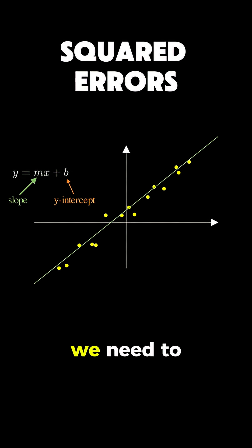To measure how well a line fits, we need to look at the mistakes it makes, and these mistakes are simply the vertical distances between each data point and where our line predicts it should be.